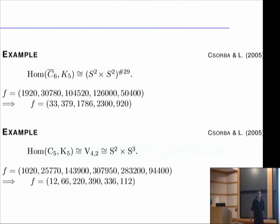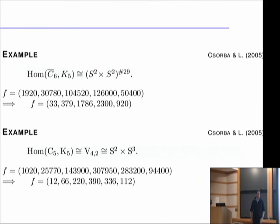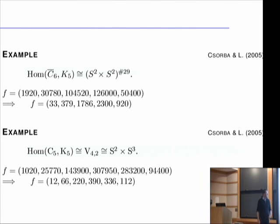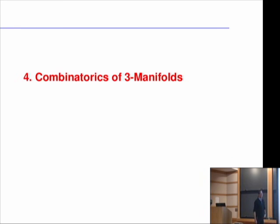Do you ever know when you've reached the triangulation with the minimum number of vertices, or do you just stop when it looks good enough? Sometimes you stop when it looks good enough, but there are also lower bounds.